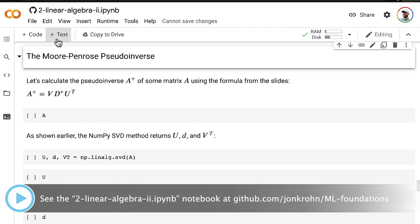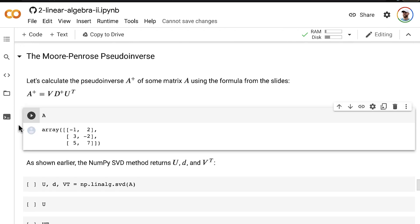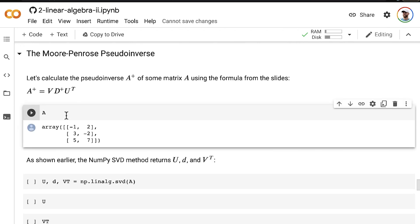Make your way back to our linear algebra 2 Jupyter notebook and the well-named Moore-Penrose pseudo-inverse section. As I said on the slide, we will calculate the pseudo-inverse A plus of some matrix A using the formula from the slides. So, let's use this matrix A, which is clearly not square. It would not be invertible, but it is pseudo-invertible.